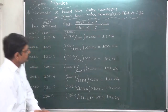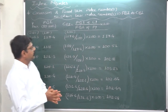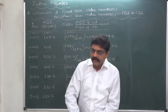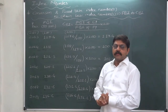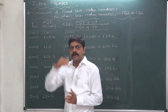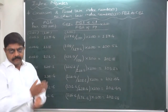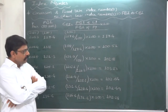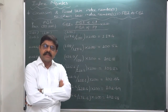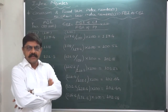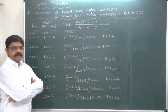This is the process of converting fixed-base index numbers to chain-based index numbers. It is not different from calculating chain-based index numbers directly from the data — both are the same. I hope both concepts are now clear: how to convert chain-base to fixed-base and how to convert fixed-base to chain-base index numbers.